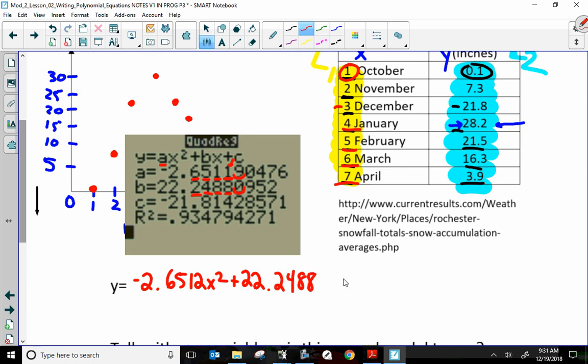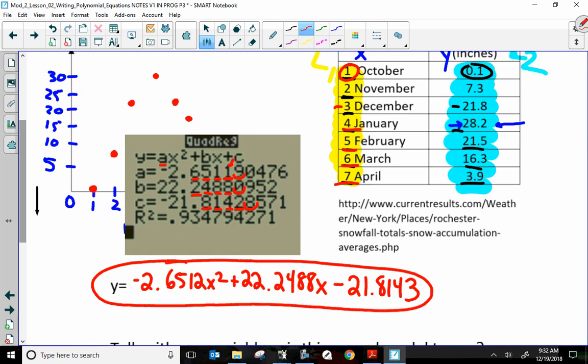x plus c. My c is negative. So, instead of saying plus a negative, which I can, you can do that and you'd be fine. I am just going to say minus 21.8142. That 2 will round up to a 3 because the number after it is 8. It's 5 or bigger. So, 8, 1, 4, 3. There you go. That is my quadratic regression for the points that we have in that scatter plot.